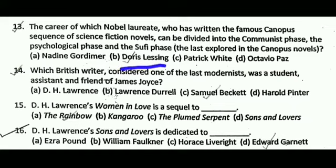Question number 14: which British writer, considered one of the last modernists, was a student, assistant, and friend of James Joyce? The correct answer is C, that is Samuel Beckett.